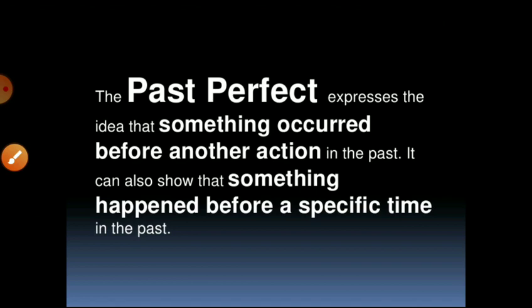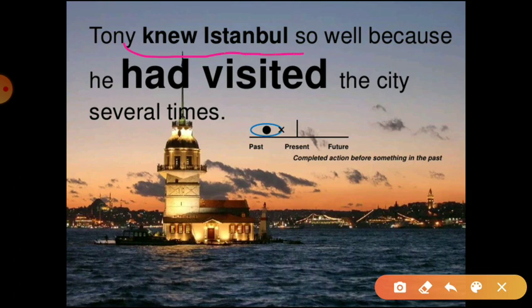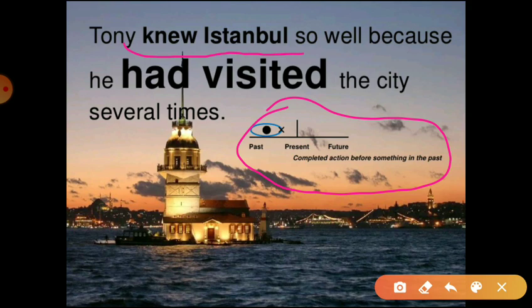The past perfect tense expresses the idea that something occurred before another action — we also know it as deep past, or past into the past. It can also show that something happened before a specific time in the past. For example: 'Tony knew Istanbul so well because he had visited the city several times before.' Here 'knew' is past and 'had visited' is the deeper past — he visited first, and only then came to know the city.